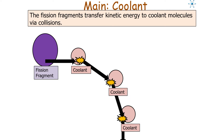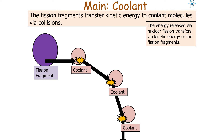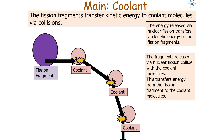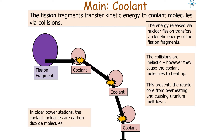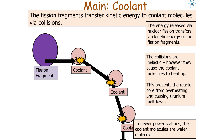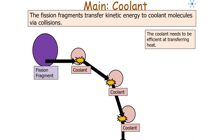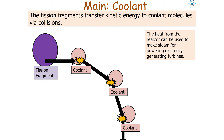Fission fragments in the fission process transfer kinetic energy to coolant molecules via collisions. The energy released via nuclear fission transfers as kinetic energy of the fission fragments, which then collide with the coolant molecules in inelastic collisions, causing the coolant molecules to heat up. This prevents the reactor core from overheating and causing a uranium meltdown. In older power stations, carbon dioxide was used as the coolant, but in newer power stations water molecules are used. The coolant needs to be very efficient at transferring heat, and the heat from the reactor can also be used to make steam for powering electricity-generating turbines.